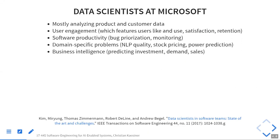You read about data scientists at Microsoft. They have very different notions of tasks — many are analyzing product and customer data, looking at what people like from telemetry, subscription renewal, etc. There are also data scientists working directly on software problems, such as machine learning for code, bug prioritization, bug prediction, and monitoring. And some work on business and domain-specific problems.